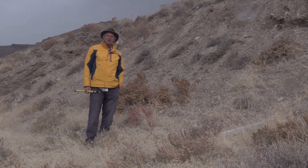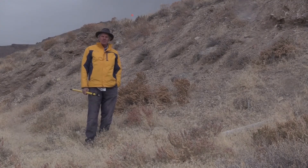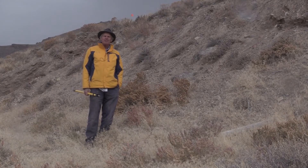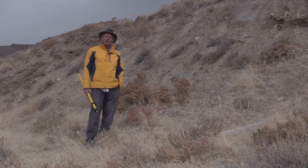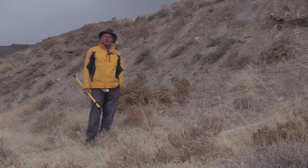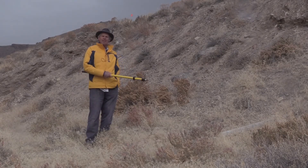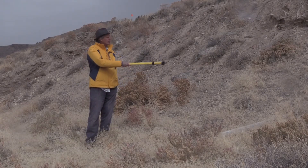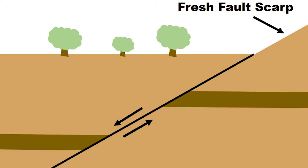We're in Miller Canyon. Miller Canyon is along the 1915 Pleasant Valley earthquake rupture, and during that rupture the ground went up about two meters here. You can see the uplift of that two meters on my left in that small cliff, and that cliff dates back to 1915.